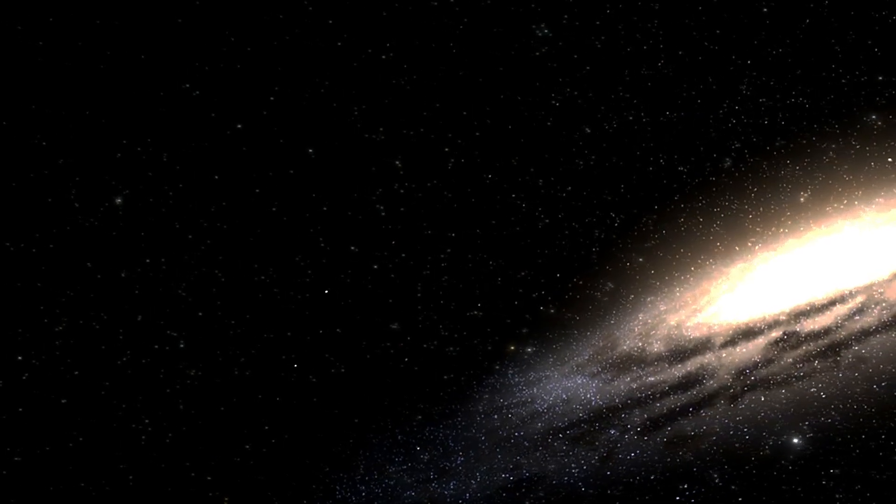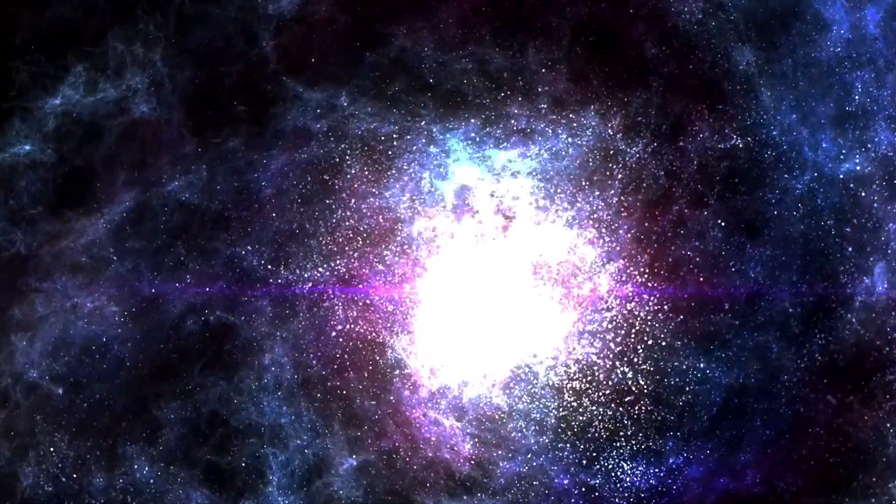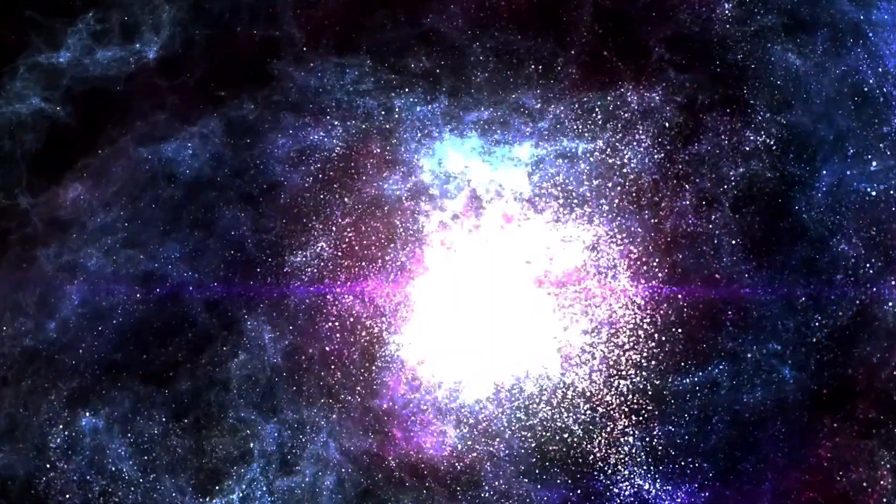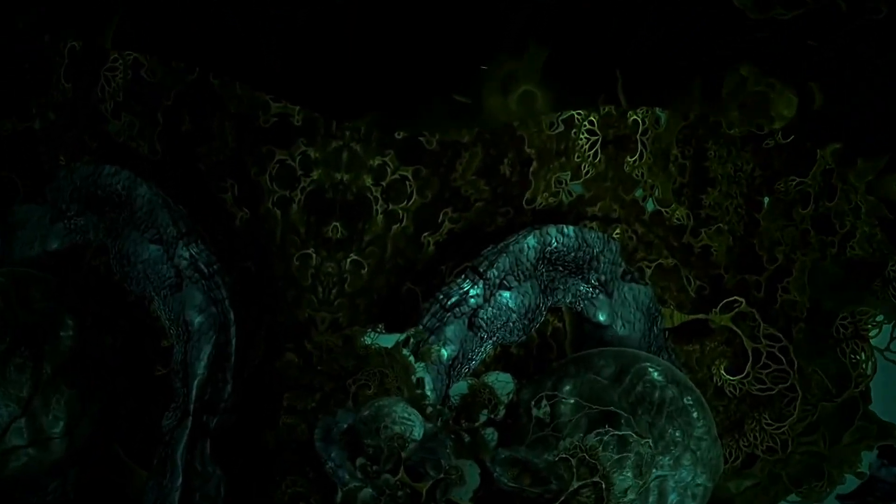These dark matter halos, if you were to examine them very coarsely, would appear smooth and spheroidal, densest at the centers, and decreasing in density out towards the outskirts. But within that smooth structure would appear much more complex substructure.